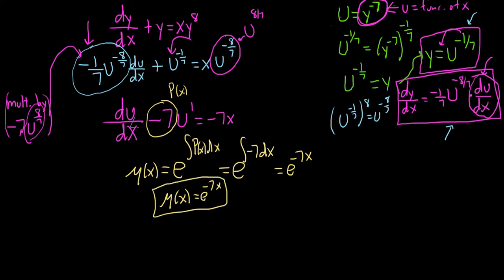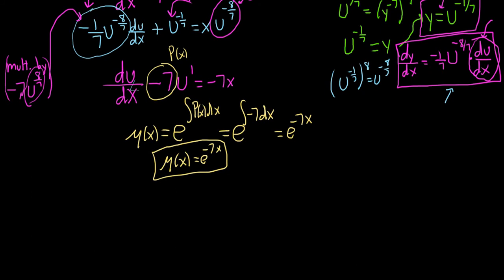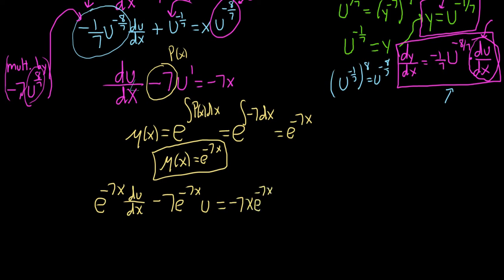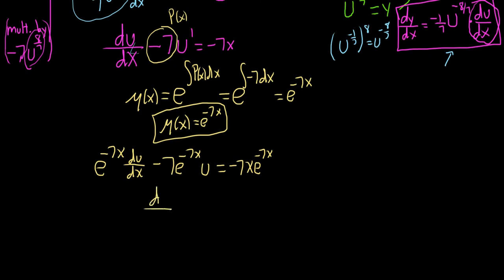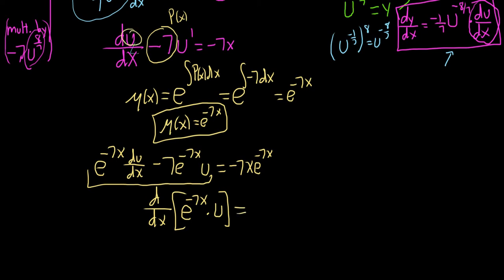The substitution at the beginning turned the Bernoulli DE into a linear DE, and now we apply the standard linear DE method. Multiply everything by the integrating factor: e^(−7x)·(du/dx) minus 7e^(−7x)·u equals −7x·e^(−7x). This entire left-hand side will magically become d/dx[e^(−7x)·u], which is the integrating factor times the function we're solving for.